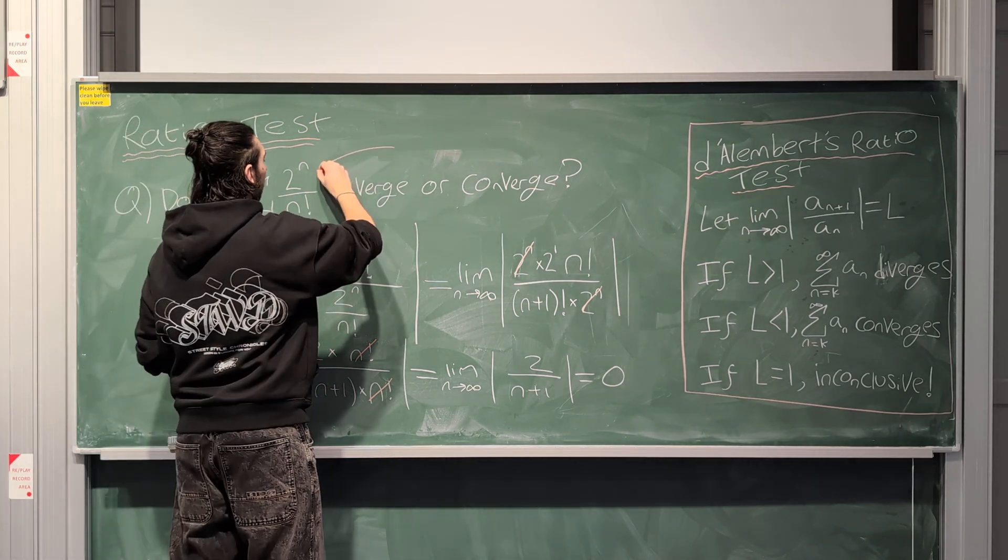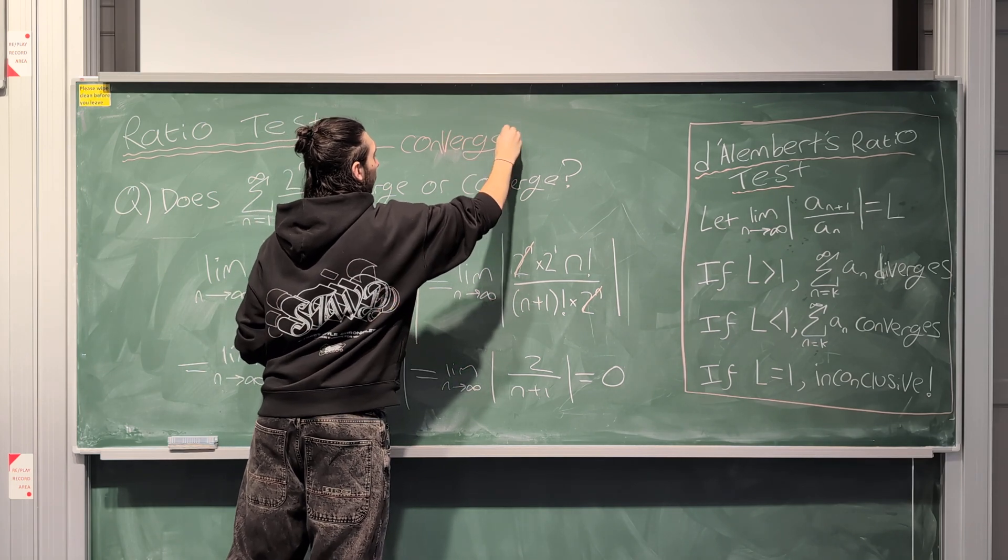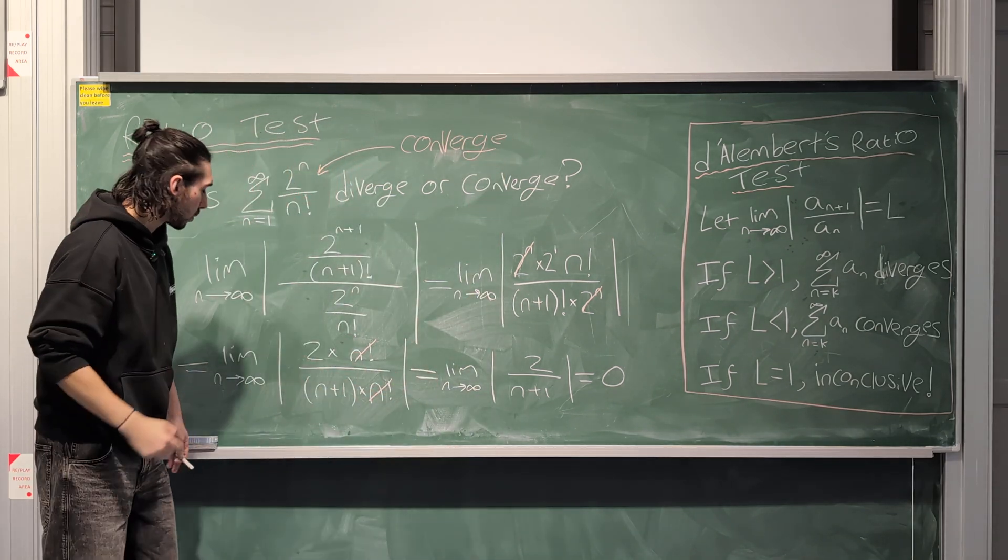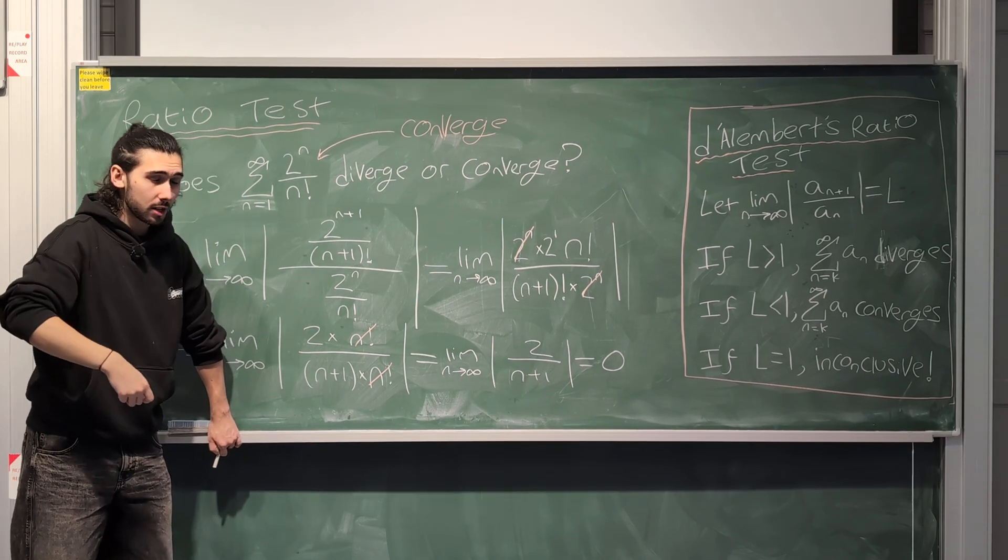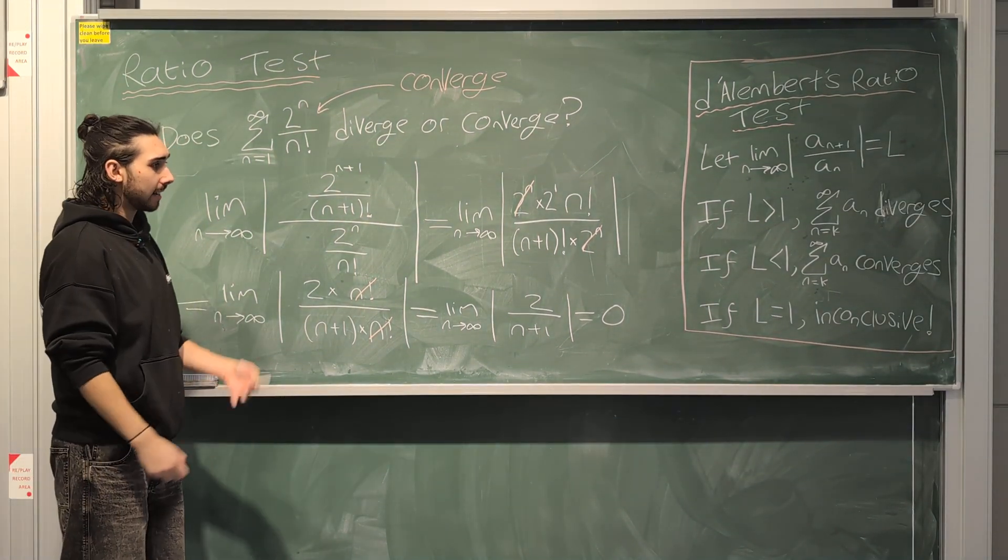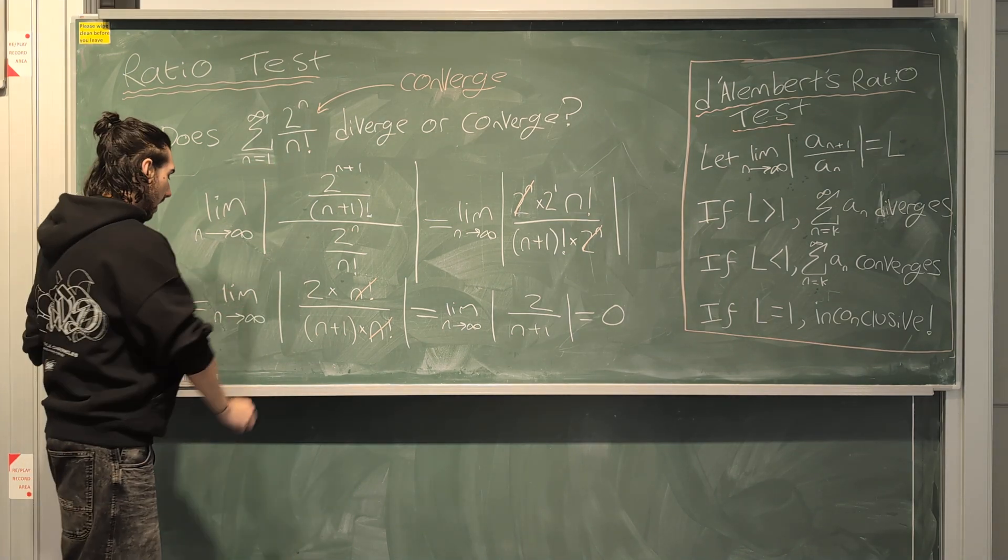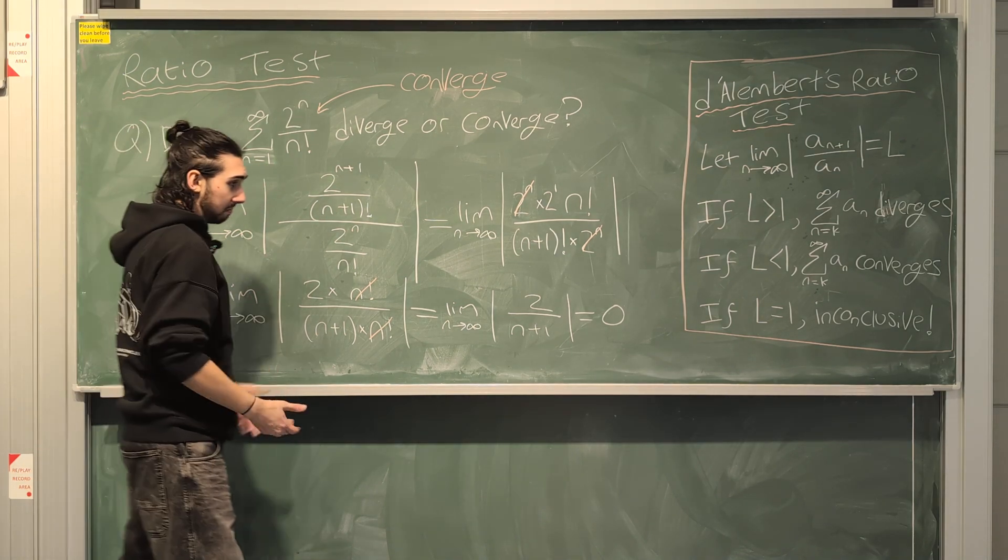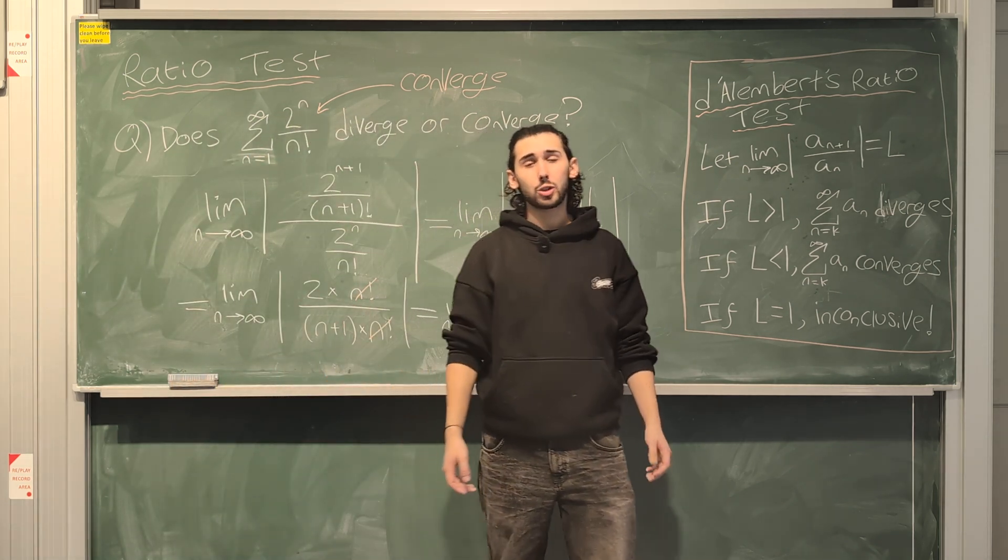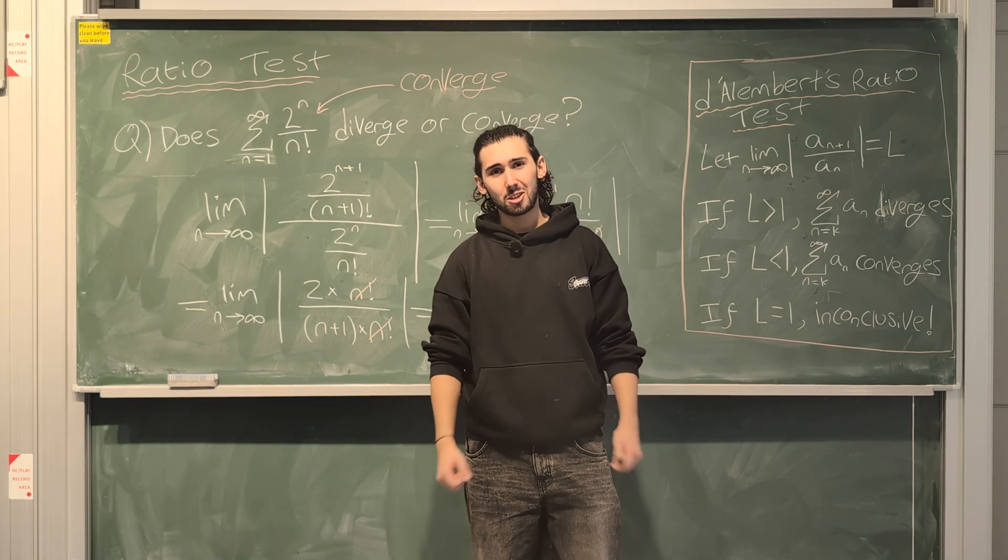So this here will converge because L, the ratio between, as n goes to infinity, the ratio between the n plus 1 term and the n term is less than 1. It's 0, in fact, which means that this converges. And that's all there is to it. So stay tuned for the next video on ratio test coming very soon. Thank you so much for watching as always. And I'll see you in the next one. Cheers.